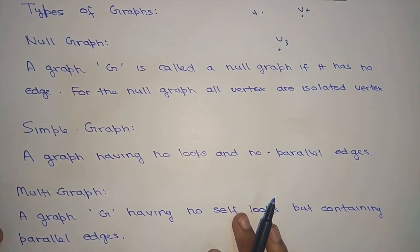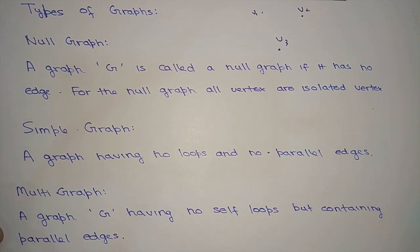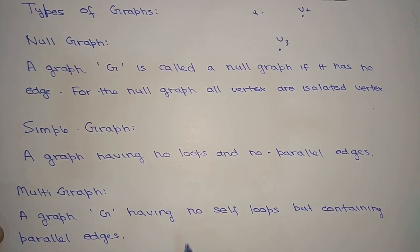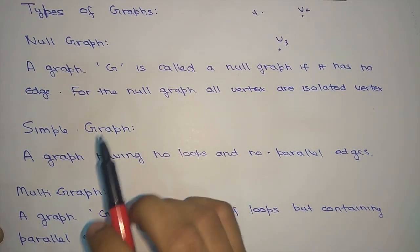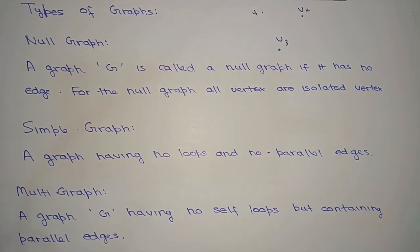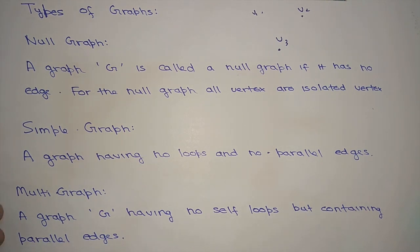A simple graph is a graph having no loops and no parallel edges. A multi-graph is a graph G having no self loops but containing parallel edges.